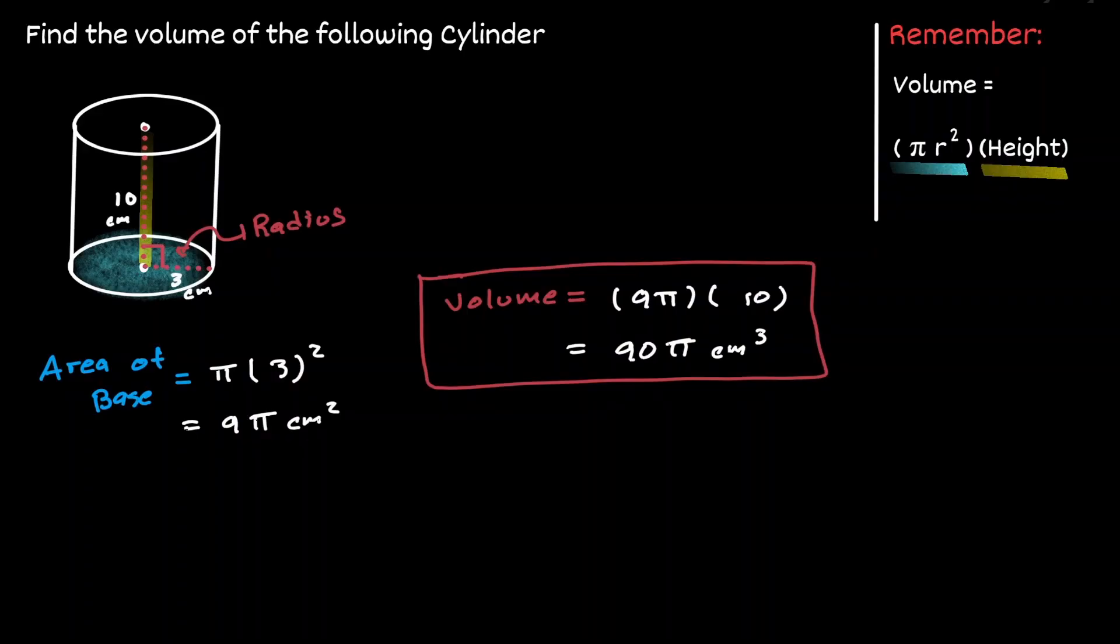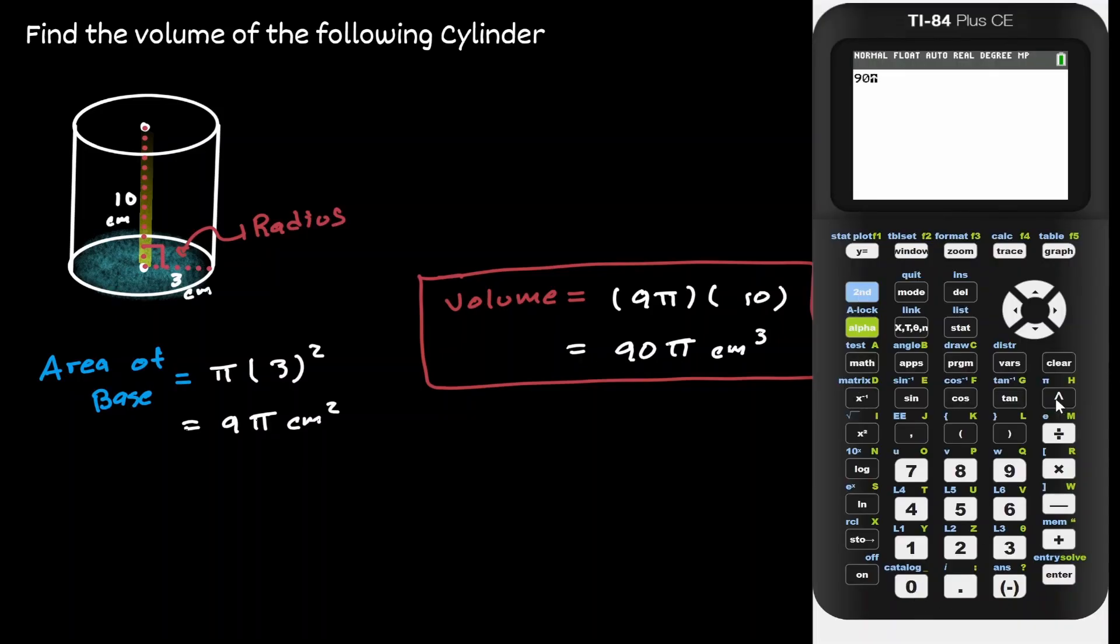If we want to express this answer in decimal, then let's use our graphing calculator to approximate this value, 90 times pi. So we can say that approximately the volume of the cylinder is 282.74 centimeters cubed.